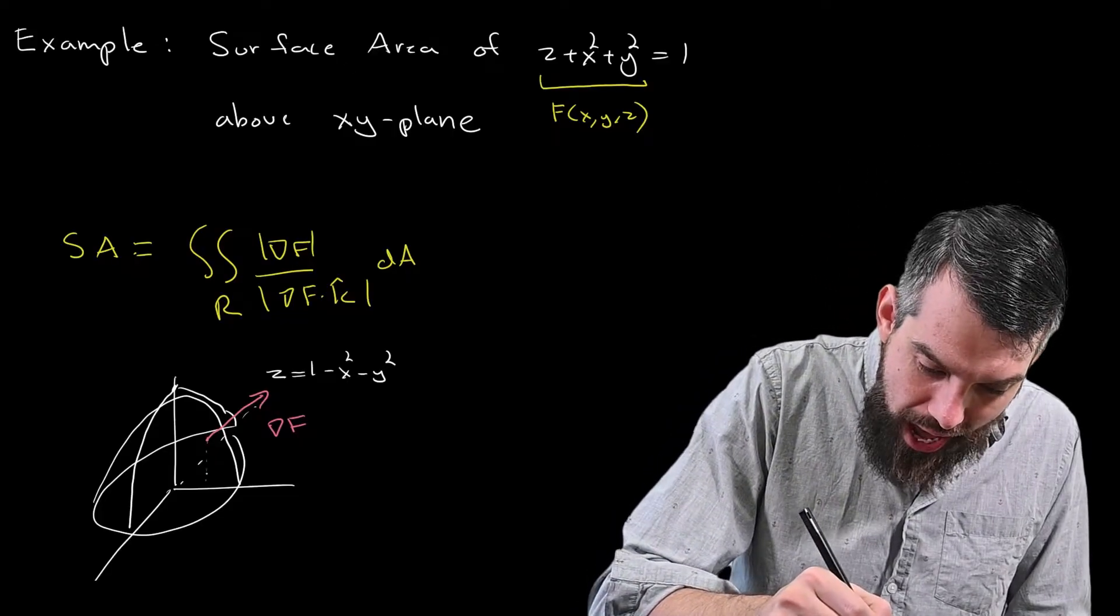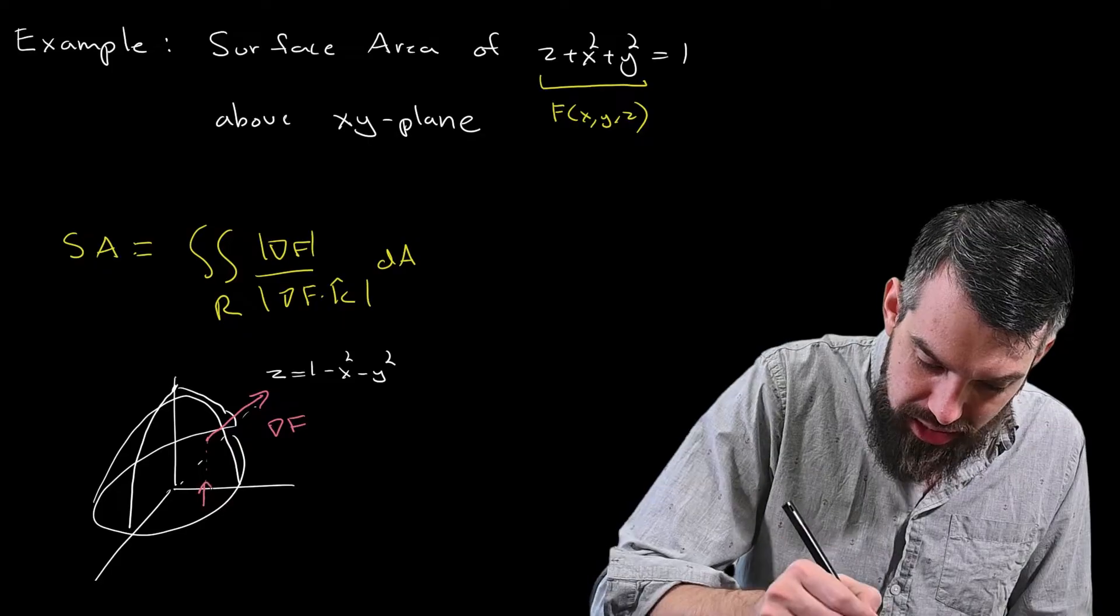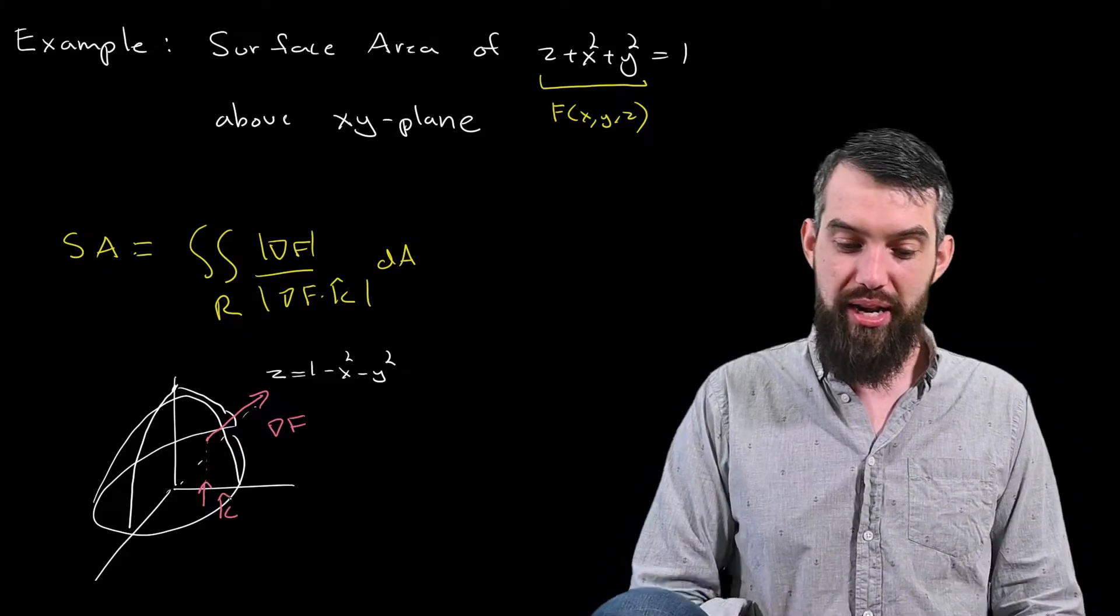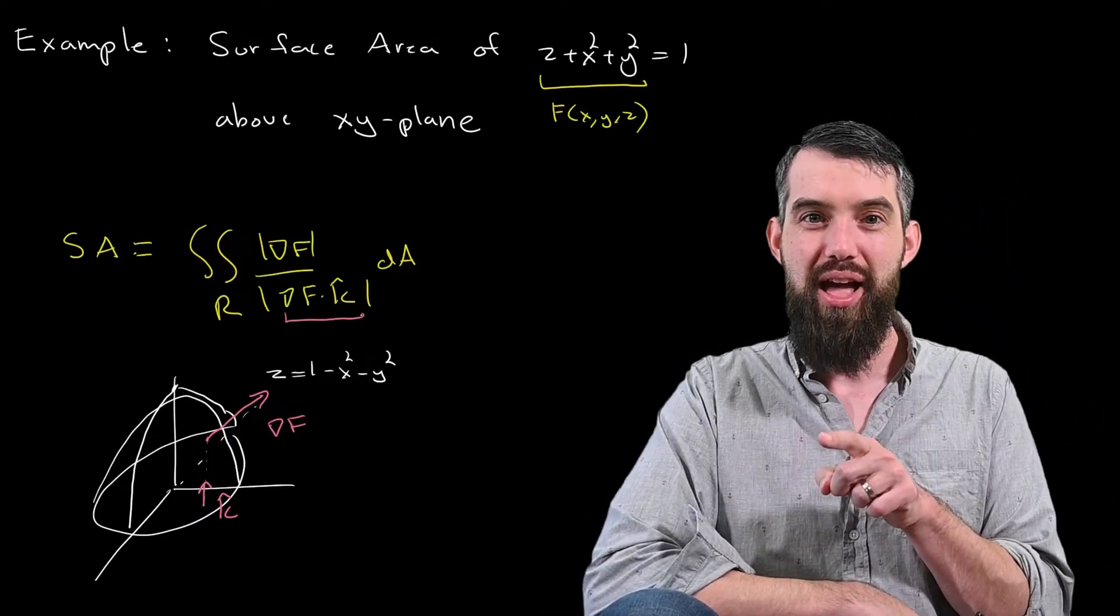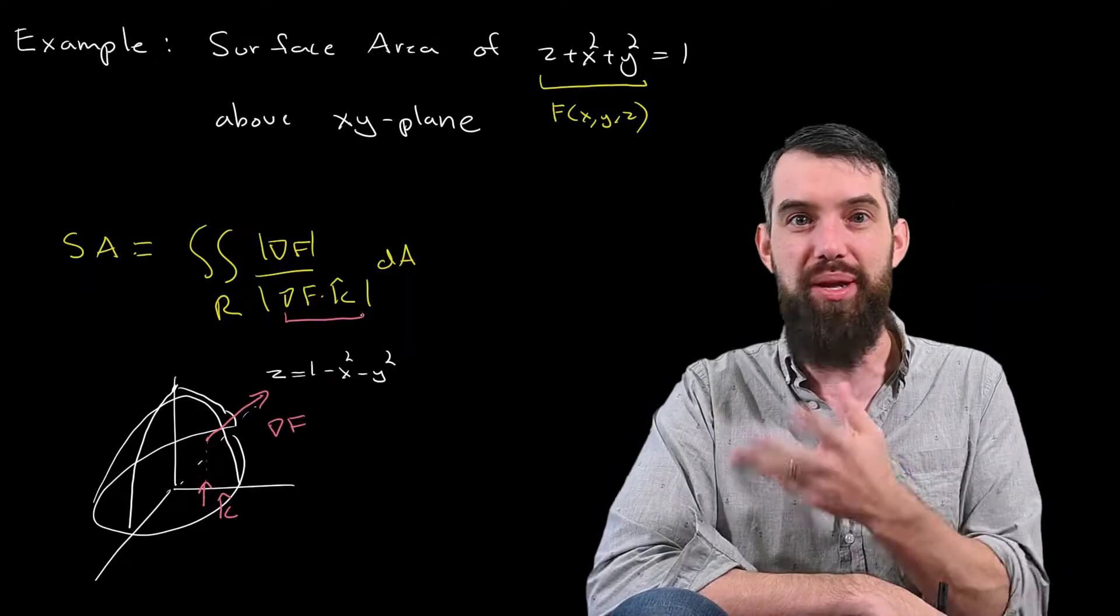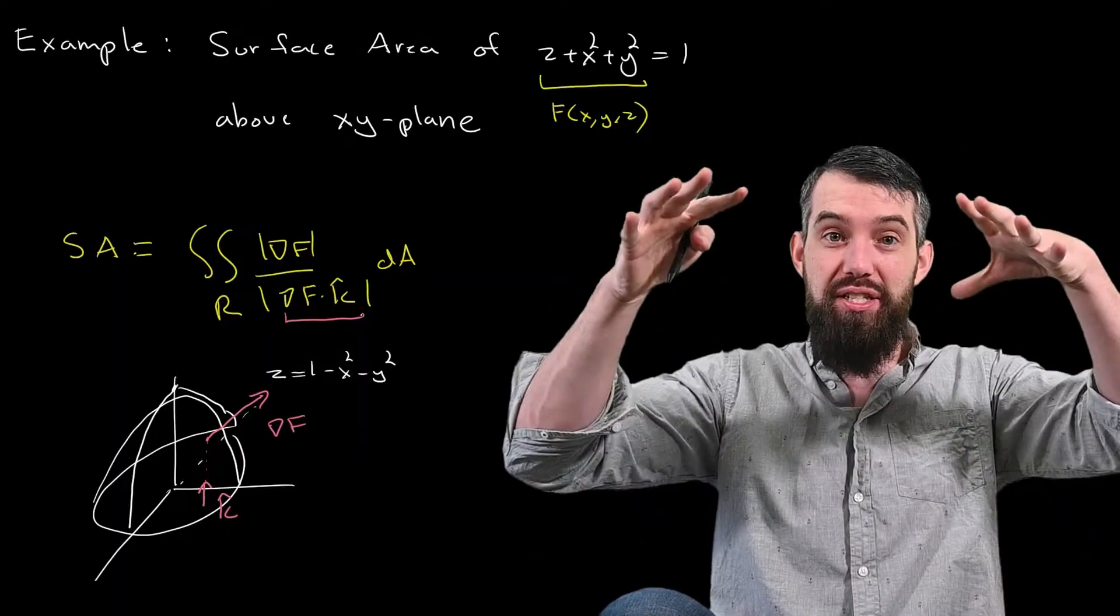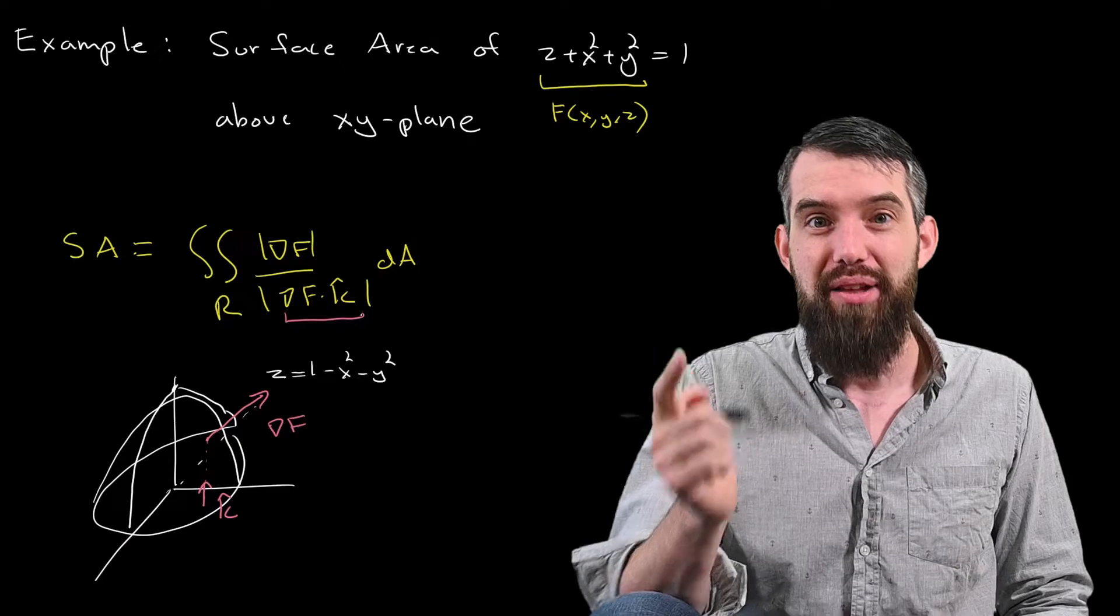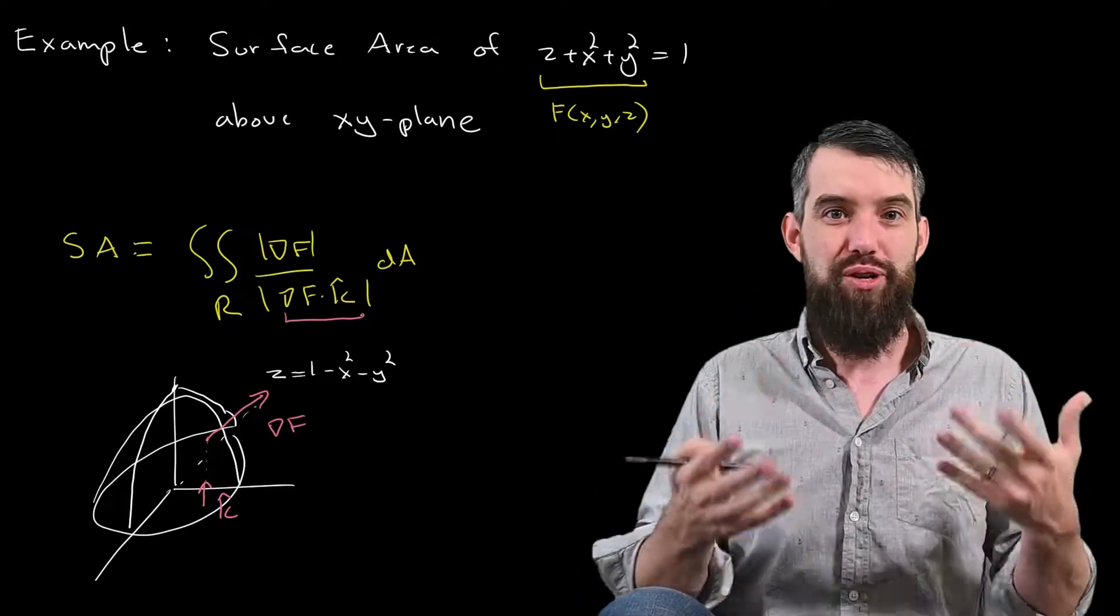And then if I project down to the corresponding point on the xy plane, there is a vector that sticks straight up, which is the k hat vector. And you'll notice that in our computation, we talk about the gradient of f dotted with the k hat. The reason it was k hat here and not i hat or j hat or something else is specifically because this can be thought of as a surface on top of the plane.